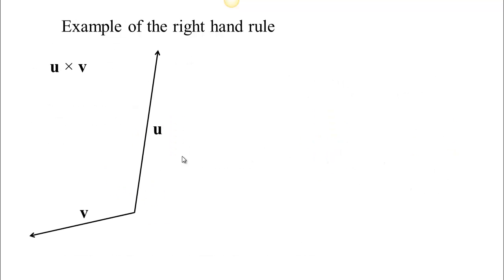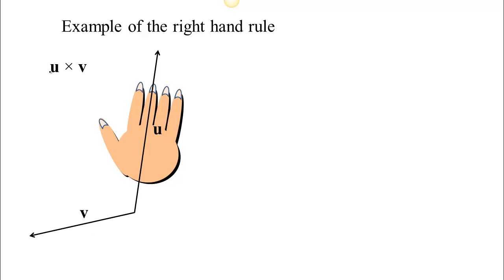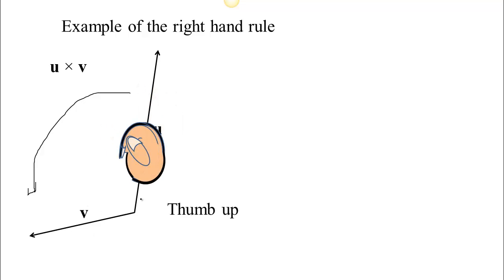Let's look at an example. We've got two vectors u and v, and we need to calculate u cross v. They lie in a plane and the cross product is perpendicular to this plane — it's either coming out at us or going away from us. Put your hand along the first vector u, then let your fingers curl toward v. Your fingers curl this way because v is on the side with your thumb, so your thumb naturally comes up. That means u cross v is coming up out at us — out of the screen toward us.